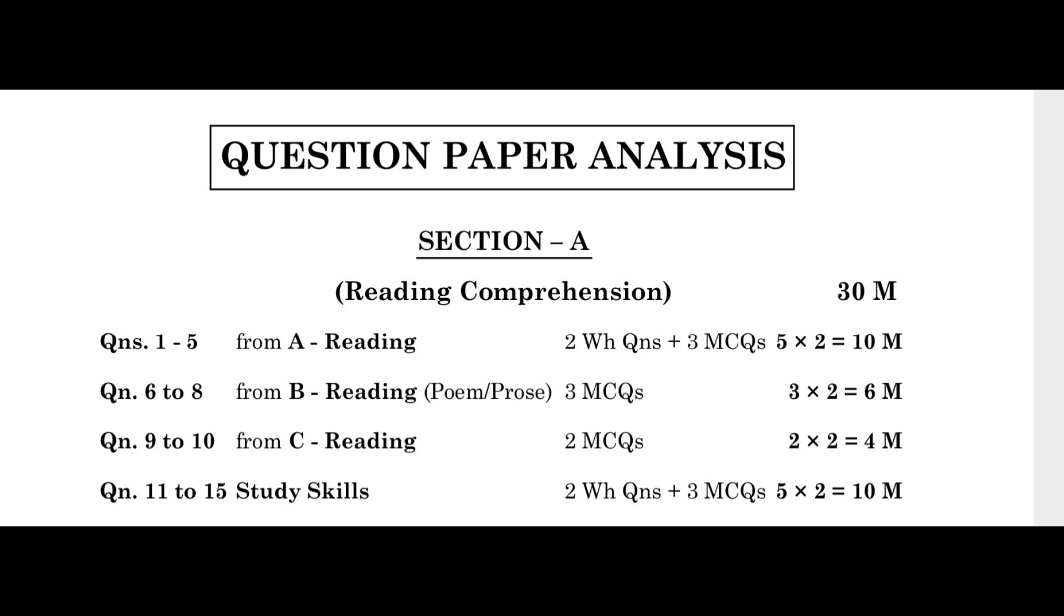Section A: Reading Comprehension for 30 marks. Questions 1 to 5 from A Reading: 2 WH questions plus 3 MCQs. Each question carries 2 marks. 5 times 2 equals 10 marks.